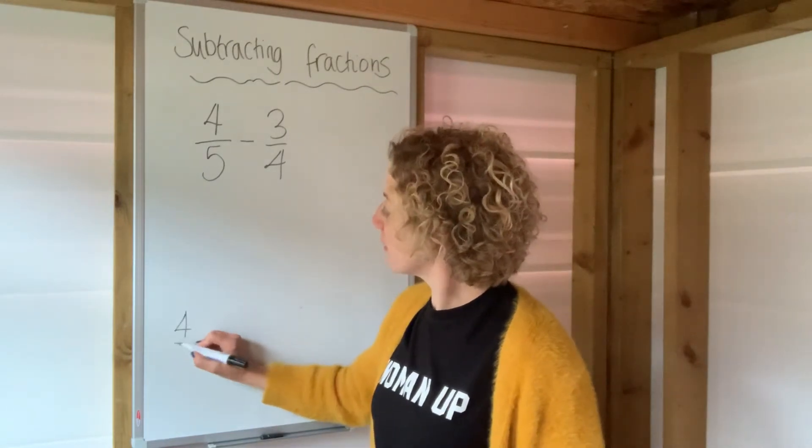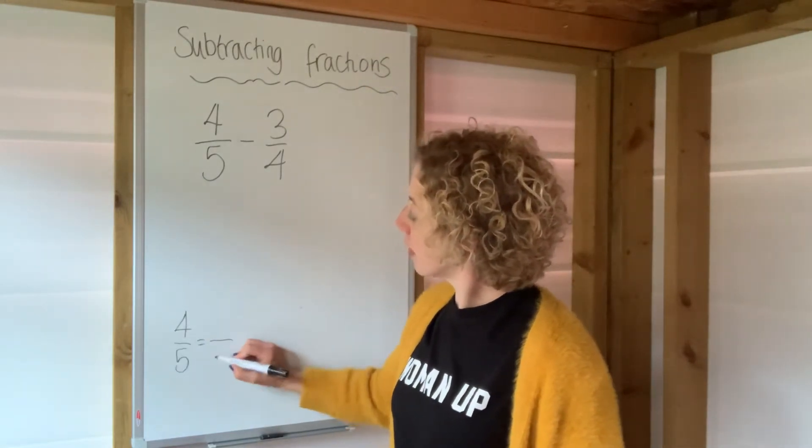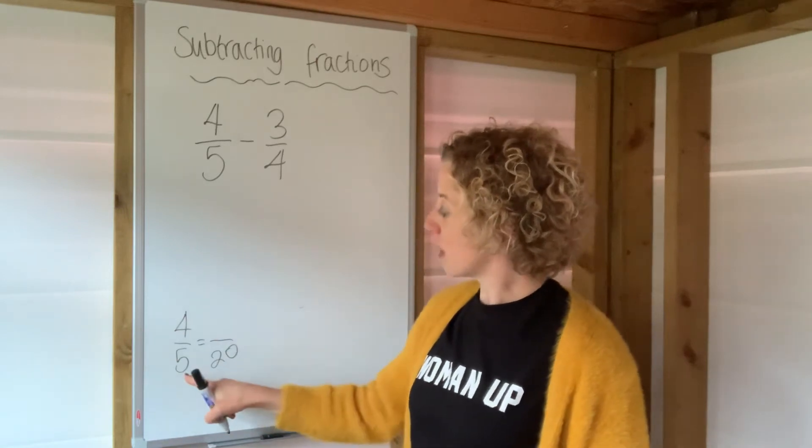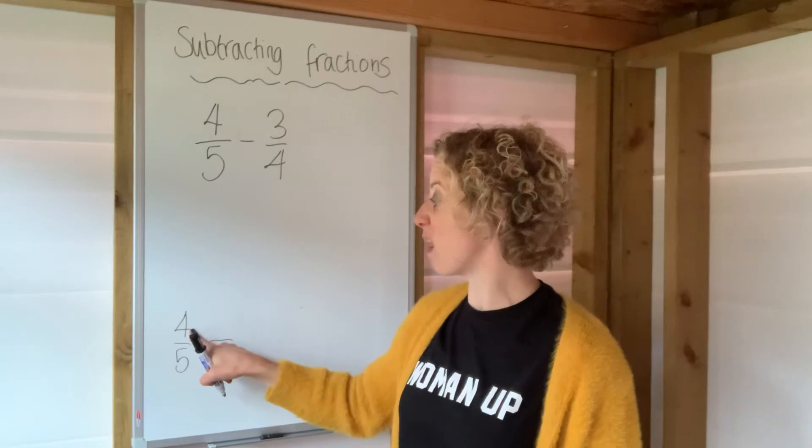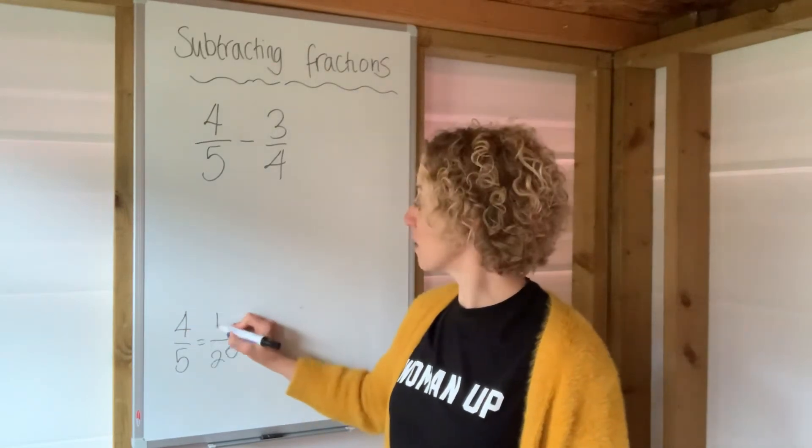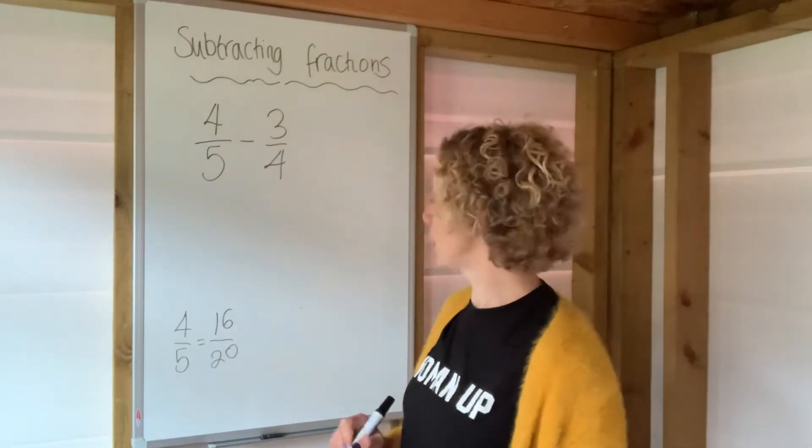I'm going to change four-fifths into something over 20. Because I times five by four to get to 20, I also times the top by four, which gives us 16 twentieths.